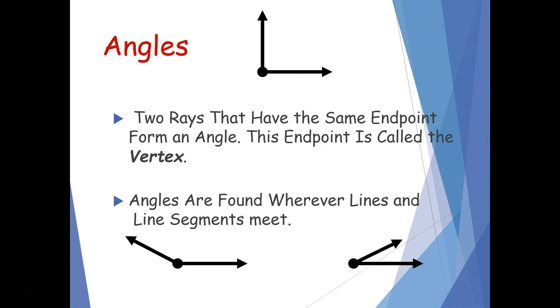Angles are found wherever lines and line segments meet. So anytime you see one endpoint and a line going in one direction and then the line going in a different direction shows that it's an angle. You have three angles on our page here. And notice that the lines are going all in different directions. It doesn't matter which direction the lines are going as long as they're all sharing that common endpoint or the vertex shows that it's an angle.